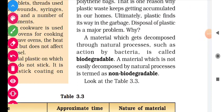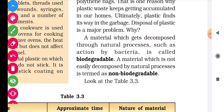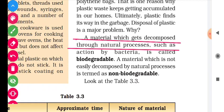A material which gets decomposed through natural processes, such as the action by bacteria, is called biodegradable. Before understanding why the disposal of plastic is a major problem, we need to know about the disposal processes. The materials which are easily decomposed inside the soil through the natural process are called biodegradable. Please mark this definition.